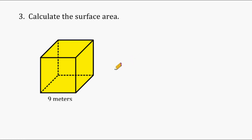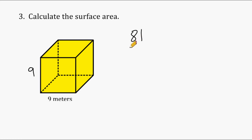For our cube, we should understand that it is composed of six congruent surfaces. So we start by finding the area of one surface. Because the surface is a square, its length and width will be identical. The area of one square surface for this example is 9 times 9, which is 81. Because all six surfaces are congruent, we multiply by 6, giving us a total of 486 square meters.